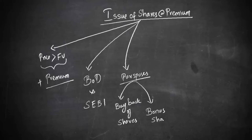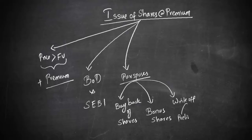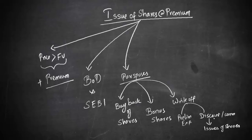Bonus shares is nothing but the capitalization of profits, where shares will be issued to the existing shareholders without any consideration. Number three, the premium can be used for write-off of certain expenses like preliminary expenses. If there are preliminary expenses, they can be written off using the share premium. If there are any discount or commission charges on the issue of shares, those can also be adjusted against the premium amount.